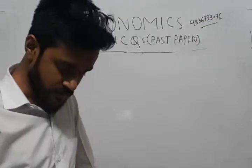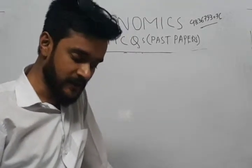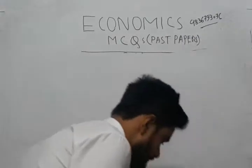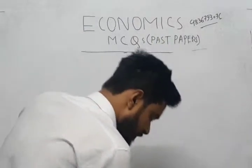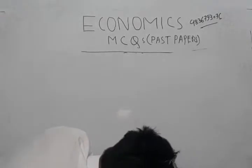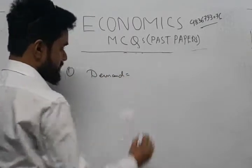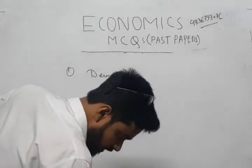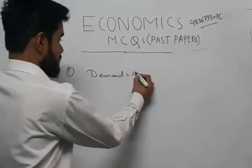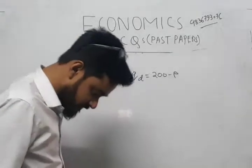Question number one: In a competitive market, the demand and supply curves of a product are given. The demand curve equation is given as Qd = 200 minus P, and the supply curve equation is given as Qs.